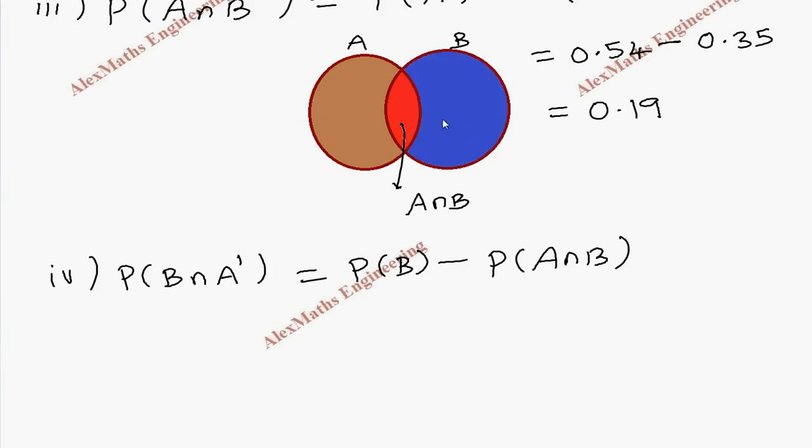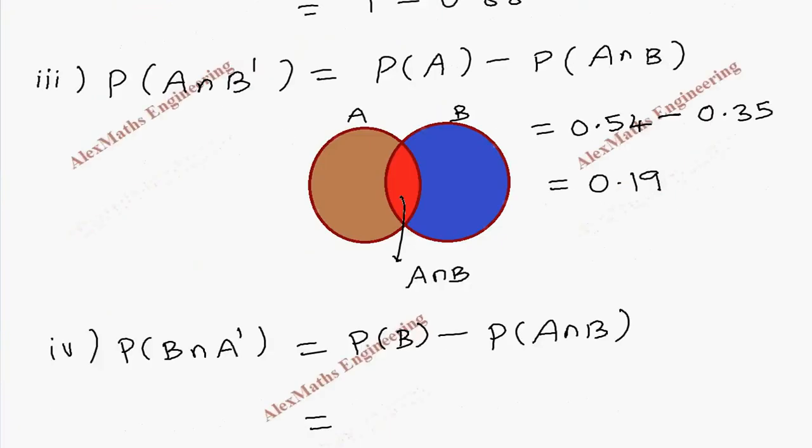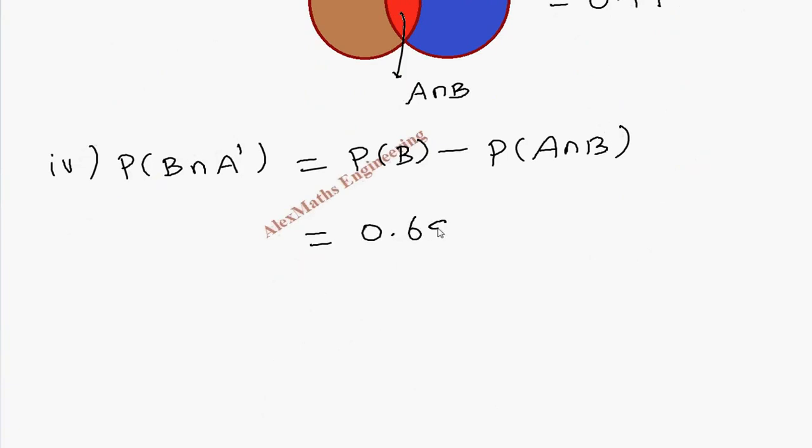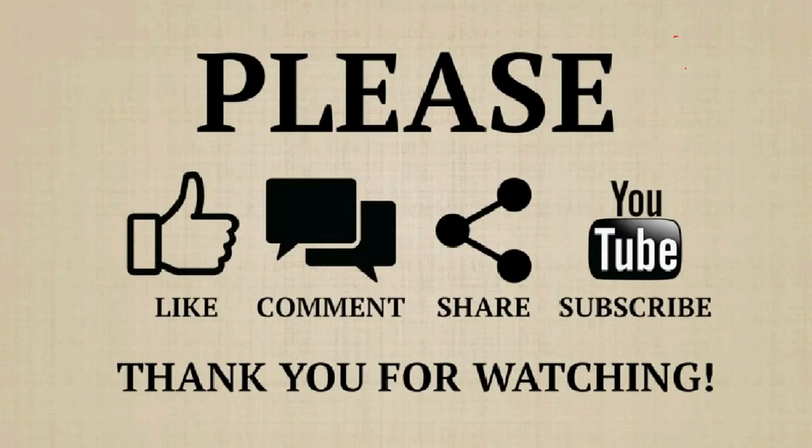This is actually B, this is the required portion. So P of B value, which is given in the question, is 0.69 minus 0.35. After subtraction, the value is 0.34.